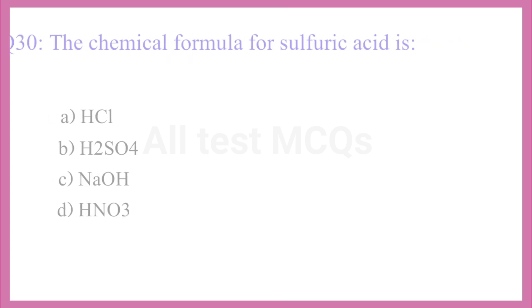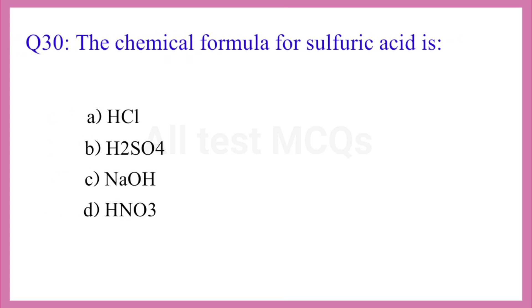Question No. 30. The chemical formula for sulphuric acid is? The correct answer is option B. H2SO4.